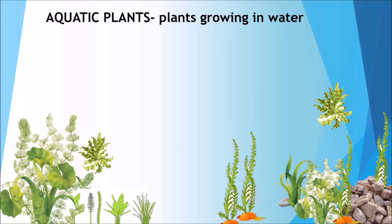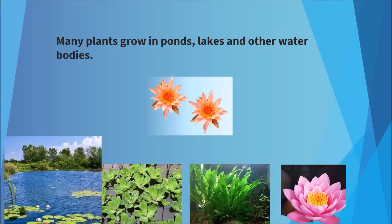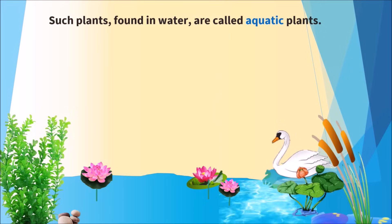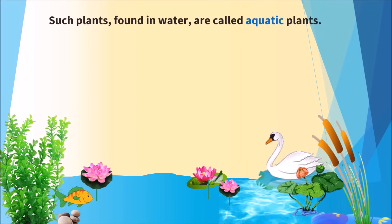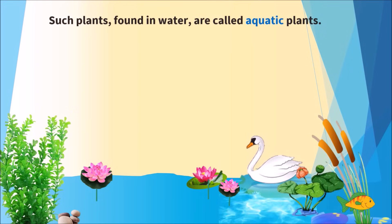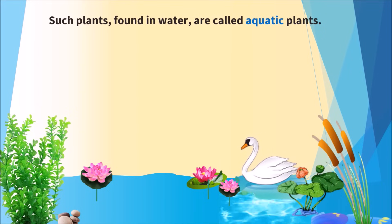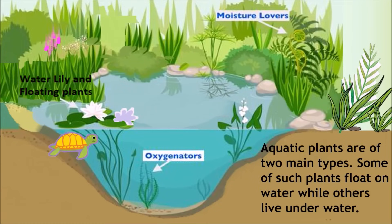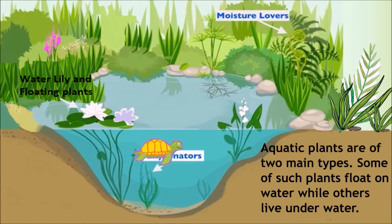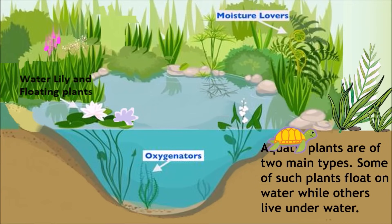Aquatic Plants are plants growing in water. Many plants grow in ponds, lakes and other water bodies. Such plants found in water are called aquatic plants. Aquatic plants are of two main types: some float on water while others live underwater.